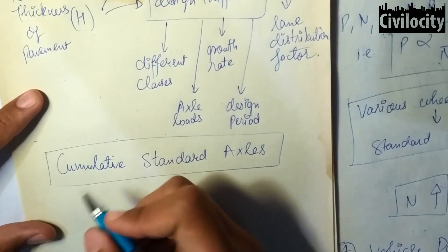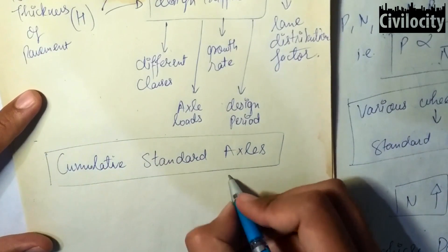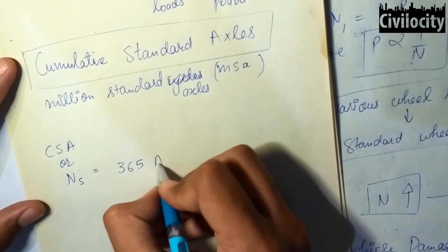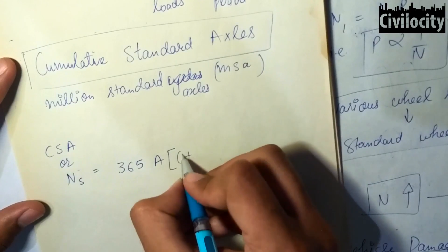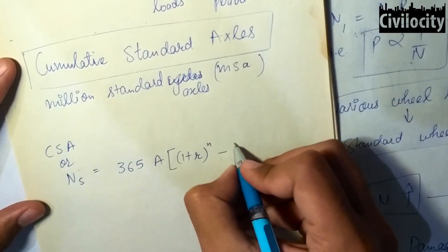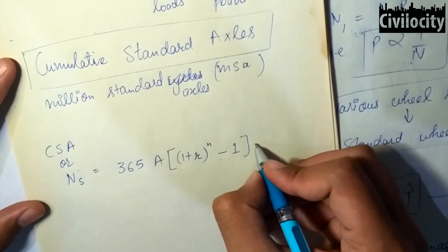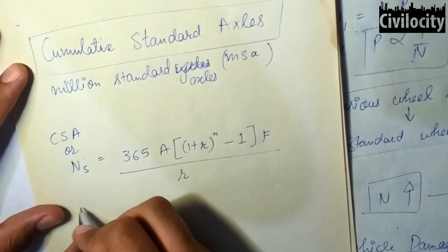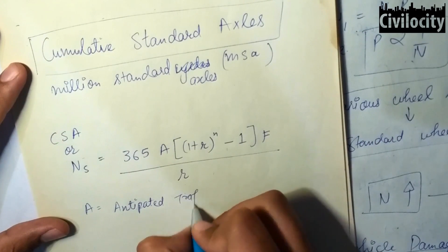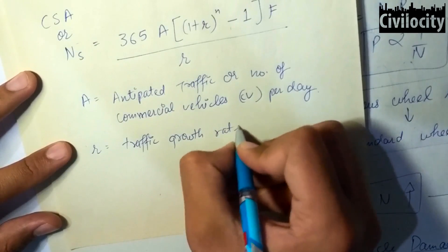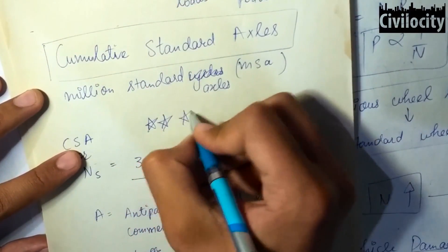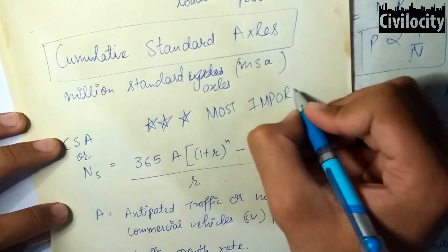The combined effect of traffic factors is represented in terms of cumulative standard axles, or million standard axles. The formula is: Ns = 365 × A × [(1 + r)ⁿ − 1] × F / r, where A is the anticipated traffic (number of commercial vehicles per day), r is the traffic growth rate, F is the vehicle damaging factor, n is the number of years, and Ns is the cumulative number of standard axles. This is the most important formula in the design of flexible pavements.